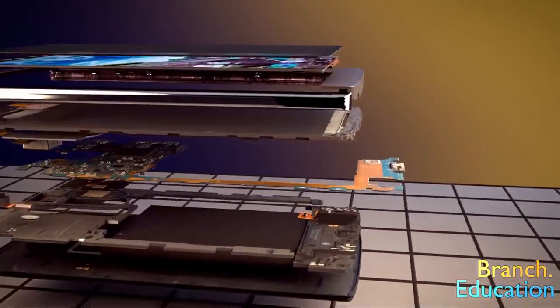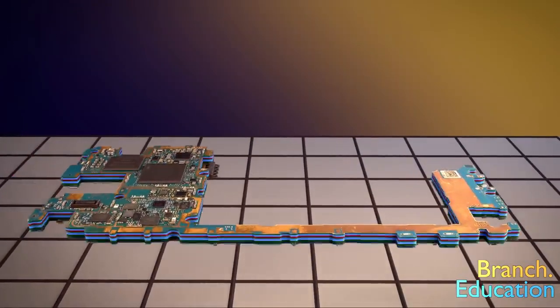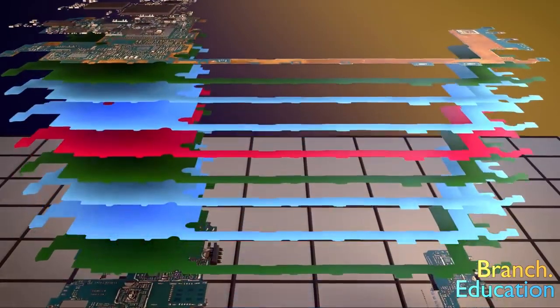So then, what is the printed circuit board made of? Well, this smartphone's PCB is actually built of 10 conductive layers. Let's go through them quickly.